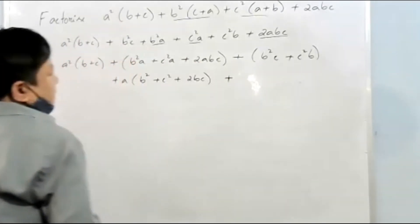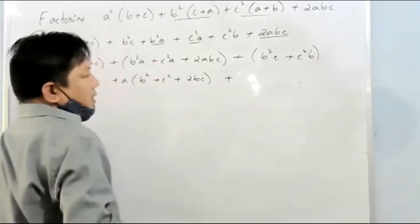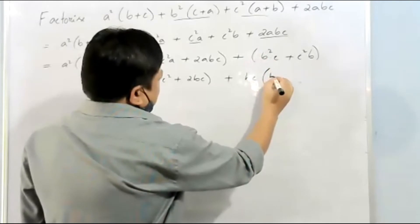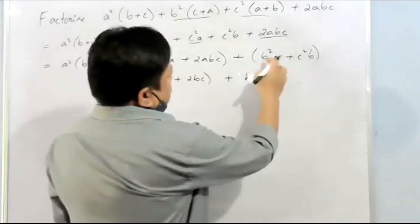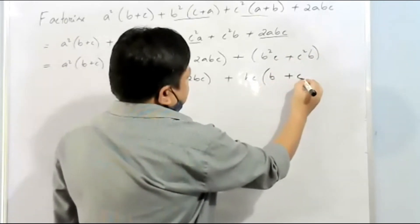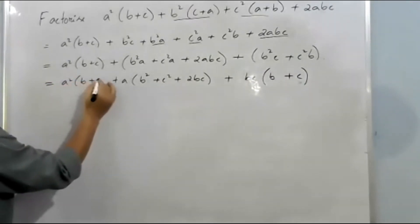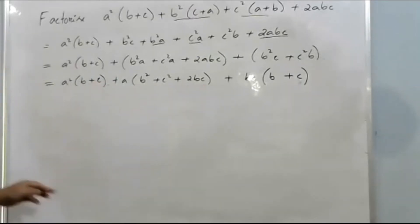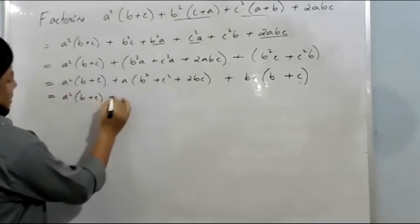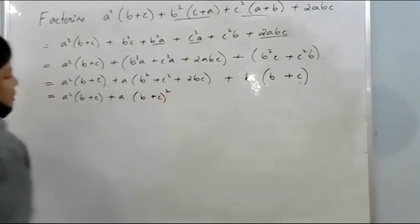From the remaining terms, b and c are common. Taking out bc as common, c is the remainder. So we have: a²(b + c) + a(b + c)², and this can be arranged using (a + b)² = a² + 2ab + b². We replace it accordingly, plus bc(b + c).